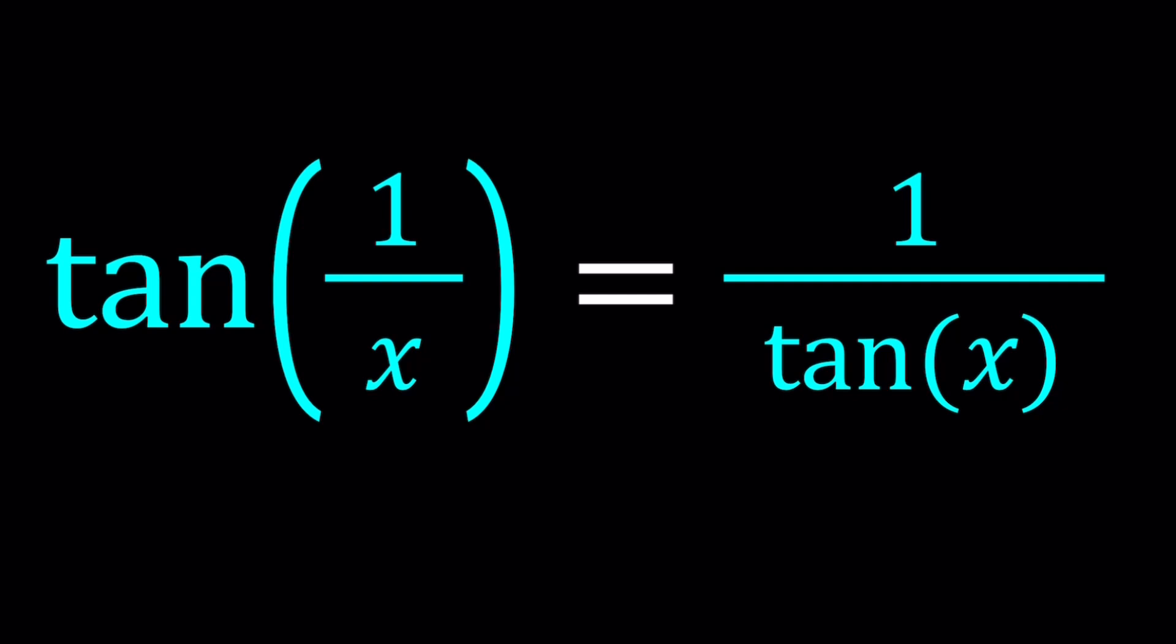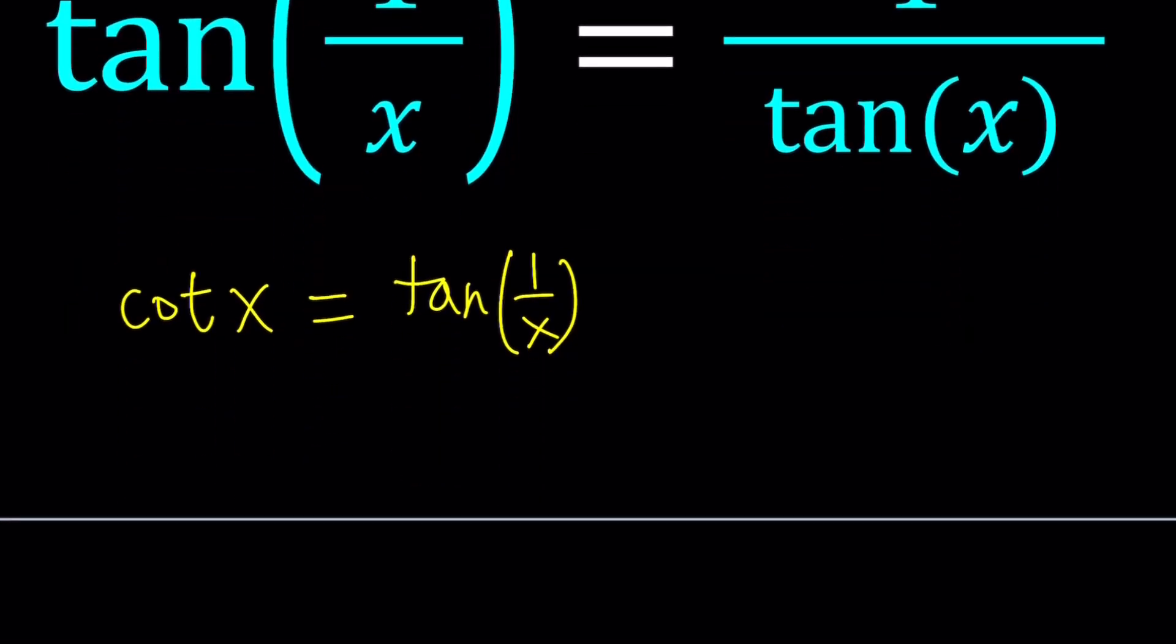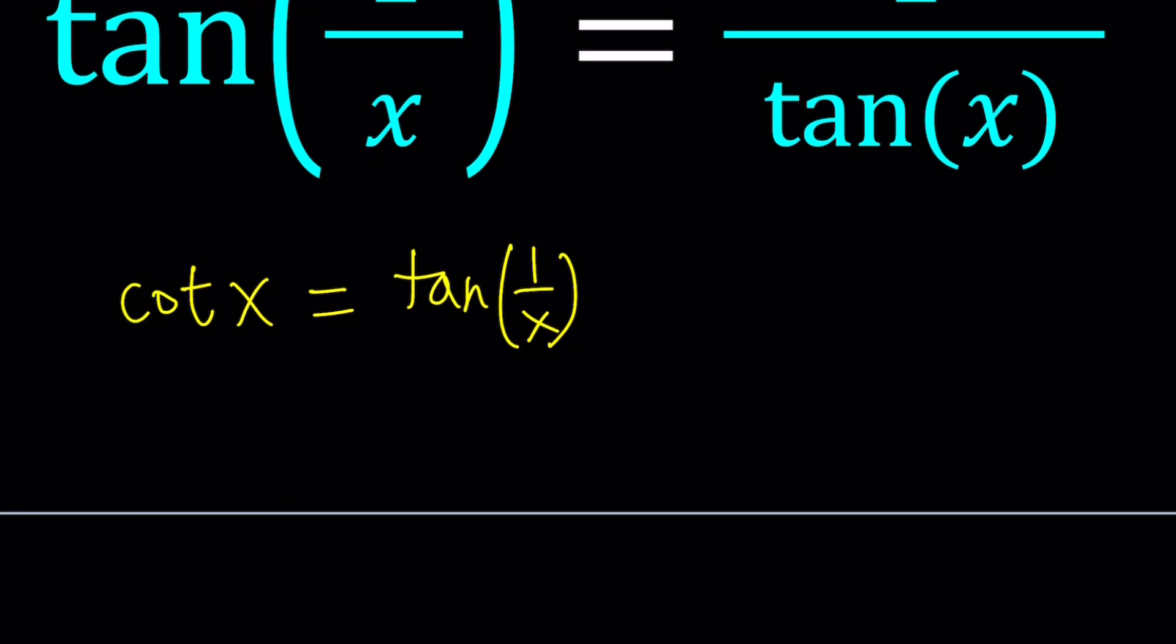First of all, I have 1 over tangent x on the right hand side, which is good because it's the reciprocal so I can replace it with cotangent. Let's leave the left hand side as is and put it on the right hand side. Now, cotangent and tangent are co-functions with a complementary relationship. If two angles add up to 90 degrees or pi over 2 radians, then the cotangent of one of them is equal to the tangent of the other. We can replace cotangent x with